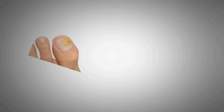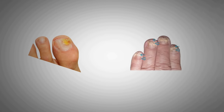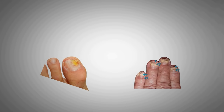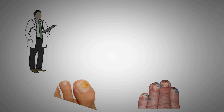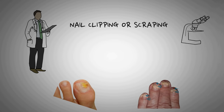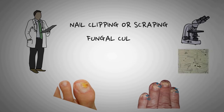Nail fungal infection usually begins as a white or yellow spot under the tip of your fingernail or toenail. As the infection goes deeper, nail fungus may cause your nail to discolour, thicken, and crumble at the edge, and it can affect several nails. If you visit a dermatologist, they can confirm the diagnosis by taking nail clippings or scrapings and observing them under a microscope. A culture can also be done for detecting the fungi.